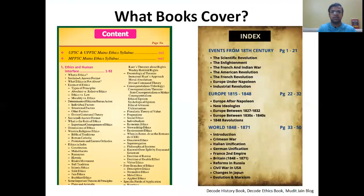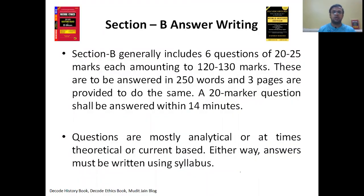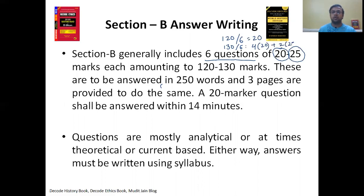Section B has six questions every year. Questions are either 20 markers or 25 markers. At times, Section B is of 120 marks — six questions, every question of 20 marks. But in some years it has been 130 marks, where four questions are of 20 marks plus two questions of 25 marks each. Either way, you have to answer them in 250 to 300 words, and at max you get three pages.